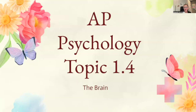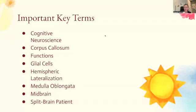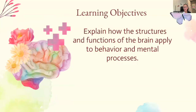Hey everyone, welcome back to learn with me. Today we're going to talk about 1.4 the brain, and we're going to understand how the structures and functions of the brain apply to behavior and mental processes. First thing we're going to look at is the key term page. I make a separate video going through each of the key terms for this section, so you can check that out after this video. We're going to start with the only CED question for 1.4: explain how the structures and functions of the brain apply to behavior and mental processes.